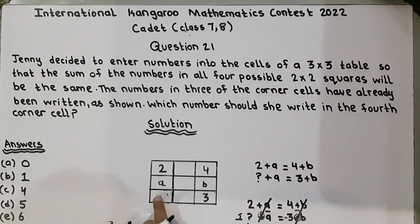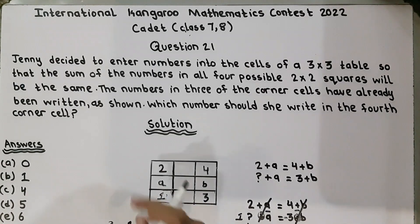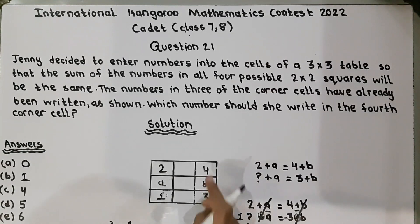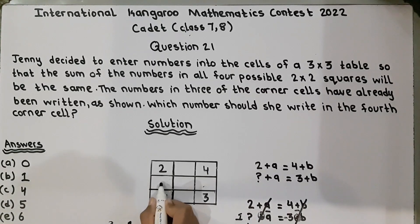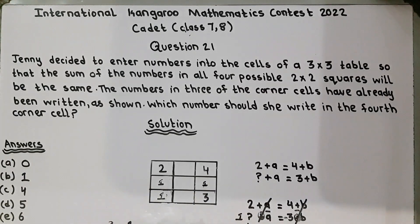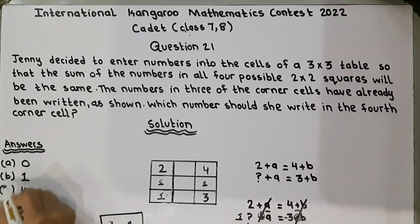Now let's check by putting in 1. So 1 plus 1 is equal to 2, and 3 plus 1 is equal to 4. We have found the answer — the question mark equals 1. So this is option number B.